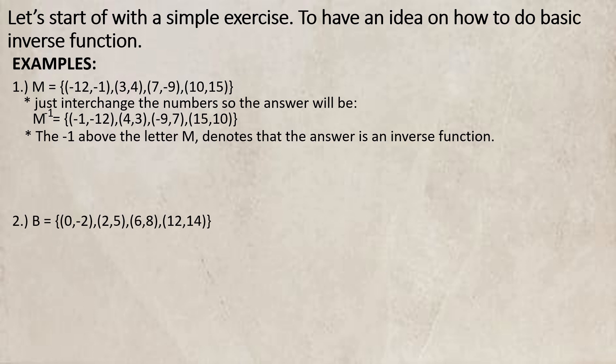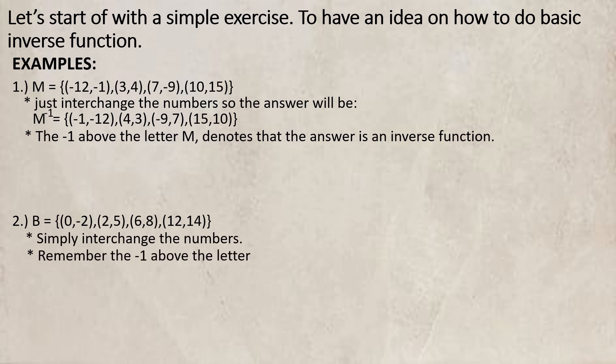Example number 2: B = {(0, -2), (2, 5), (6, 8), (12, 14)}. Simply interchange the numbers. Remember the negative 1 above the letter. B⁻¹ = {(-2, 0), (5, 2), (8, 6), (14, 12)}.